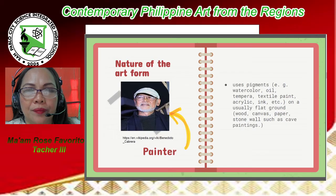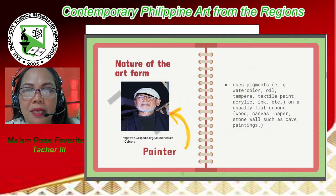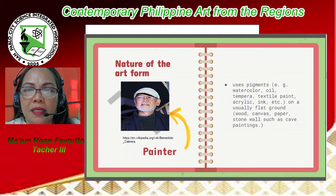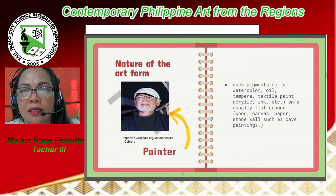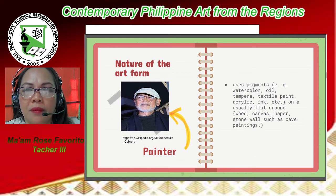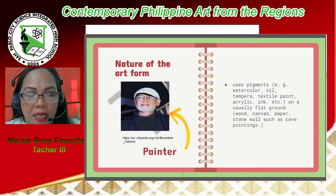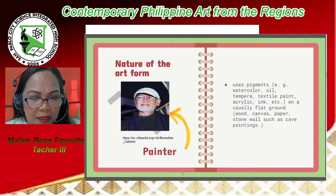Number three is painting. A painter uses pigments like watercolor, oil, tempera, textile paint, acrylic, ink, etc. on a usually flat ground — wood, canvas, paper, or stone walls such as cave paintings.